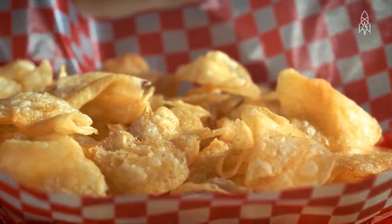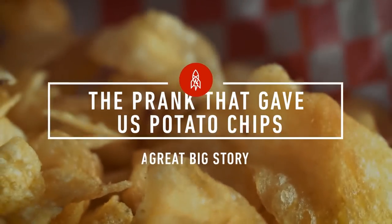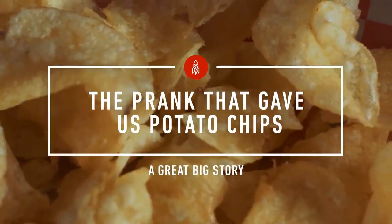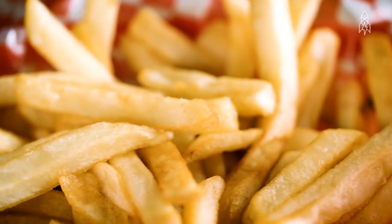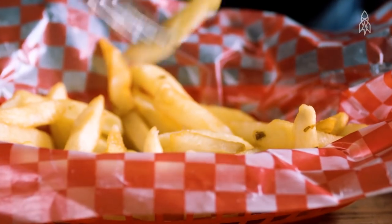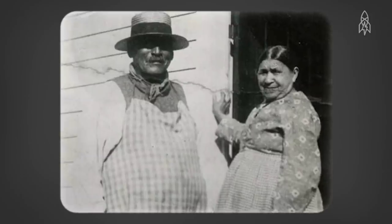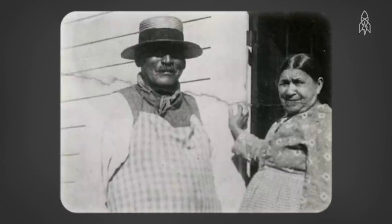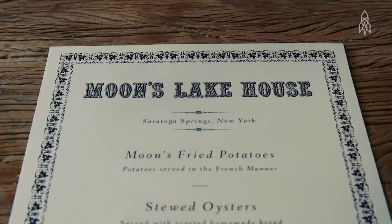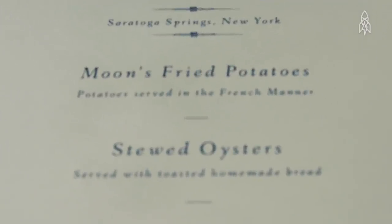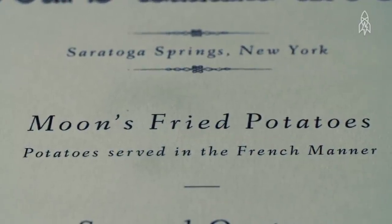The creation of the potato chip is a rather snarky, surprising, and idiosyncratic story. When french fries made their way to America, they soon became a restaurant mainstay. Many restaurants served fries as their signature dish. Believe it or not, they were once considered very hoity-toity. In 1853, George Crumb was a chef at the Moon's Lake House in Saratoga Springs, New York. Their signature dish was none other than Moon's Fried Potatoes. Or as the aristocrats would say, Potatoes served in the French manner.